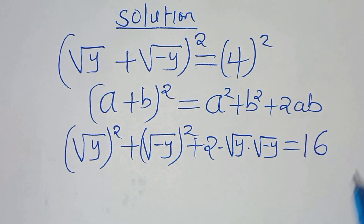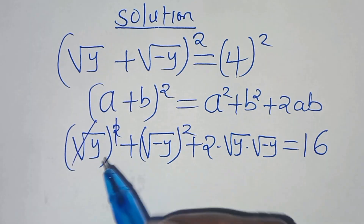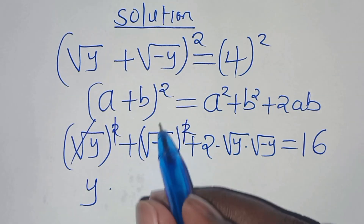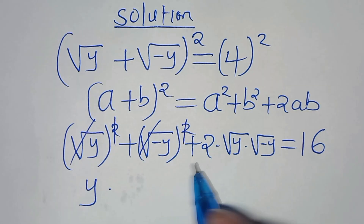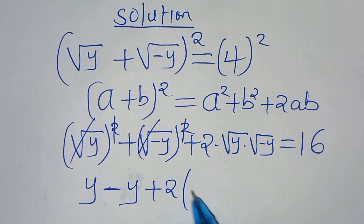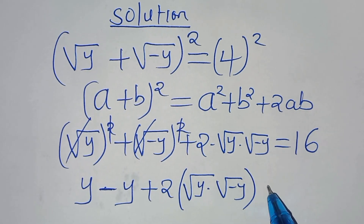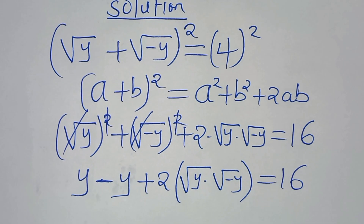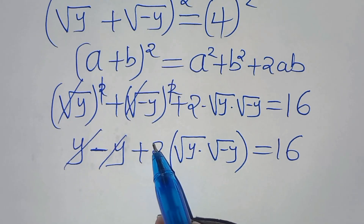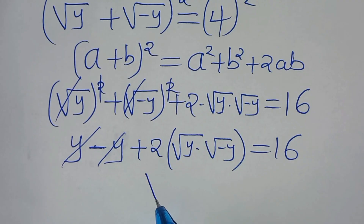The next step is to eliminate the square root signs. We have y, then the square root of minus y squared gives plus times minus y, which is minus y. Then we have plus 2 times square root of y times square root of minus y, all equal to 16. Since y minus y simplifies to zero, we now have 2 times square root of y times square root of minus y equals 16.